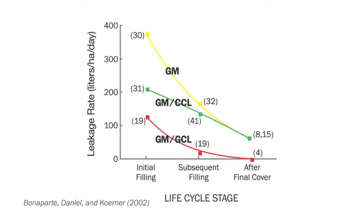Essentially, to achieve the highest performance in an engineered barrier system, use a geosynthetic clay liner. This chart summarizes research conducted by three of the field's most influential figures for barrier system understanding. It looks at leakage of constructed liner systems, including a geomembrane-only design, a composite geomembrane-compacted clay liner system, and a geomembrane-geosynthetic clay liner composite design, from initial filling to post-cover installation. The research demonstrates an engineered barrier system comprised of a geomembrane-geosynthetic clay liner composite has the lowest leakage rate throughout.